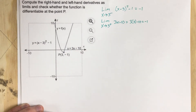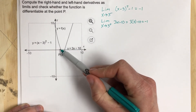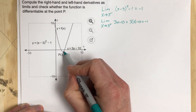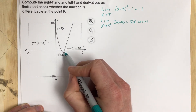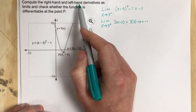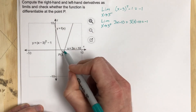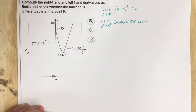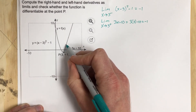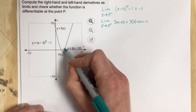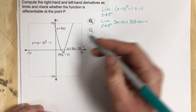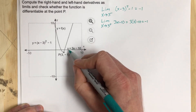But that's not what they're asking us for — they're asking us if it's differentiable. Can we find a derivative at this point? To compute the right and left-hand derivatives, I need to use the derivative definition, except instead of limit as h approaches 0, I'll take the limit as h approaches 0 from the right and from the left. Let's start with the easy one, which is the right side.